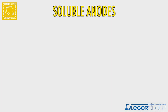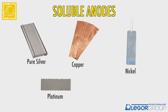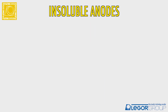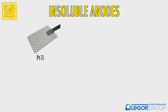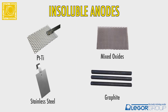Examples of soluble anodes would be pure silver, pure copper, pure nickel, and historically pure palladium and pure gold. Some examples of insoluble anodes are platinized titanium, mixed oxide, stainless steel, and graphite.